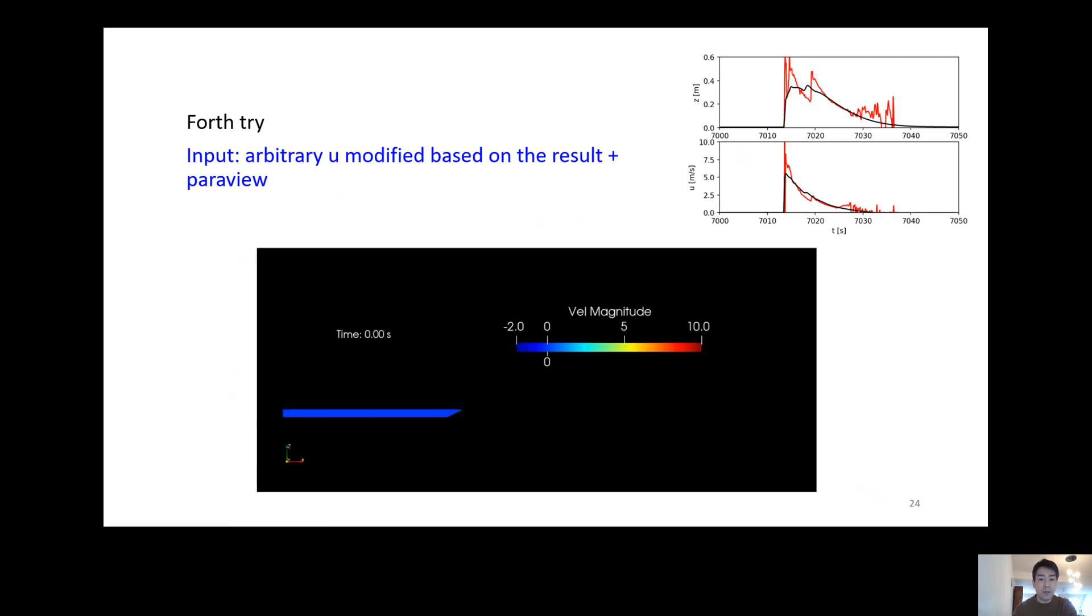On the fourth try, we used information from ParaView. On the top right panel, you can see the result. As you can see, there are two peaks of the flow depths. These need to be smaller. If we can see the ParaView visualization, we can see the timing of the wave generation of these two peaks.